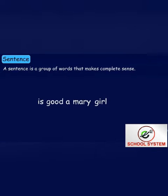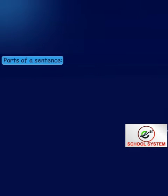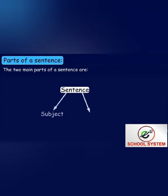Parts of a Sentence — Subject and Predicate. Let's start. A sentence is a group of words that makes complete sense. The two main parts of a sentence are subject and predicate.